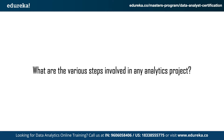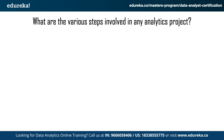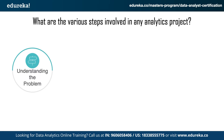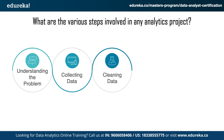The third question is: what are the various steps involved in a data analytics project? The various steps involved in any common analytics project are as follows. You start with understanding the problem — understand the business problem, define the organizational goals, and plan for a lucrative solution. After that you will start collecting data — you'll gather the right data from various sources based on your priorities. The third step is cleaning data, where you'll clean the data to remove unwanted, redundant, and missing values.